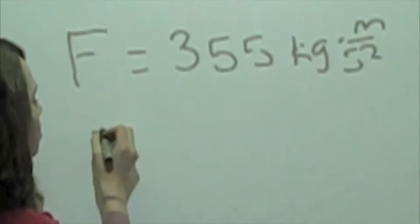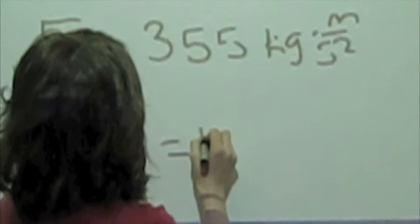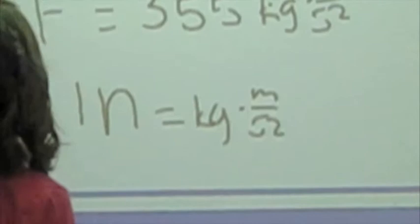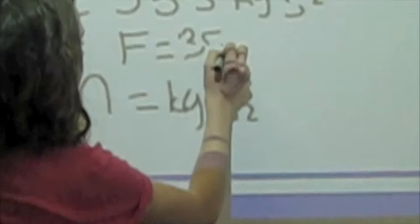To get newtons, I have to show you the units. 1 newton is equal to 1 kilogram times meters per second squared. So, my answer is F equals 355 newtons.